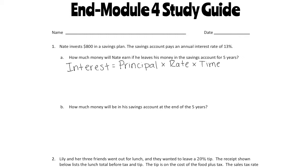Now we need to look at our scenario and figure out what's our principal, what's our rate, and what's our time. Our principal is going to be the amount that he puts into the savings plan, and he puts $800 into the savings plan. The rate is going to be the percent — the annual interest rate of 13%. When we have rate as a percent and we multiply it, we have to turn that percent into a decimal. So when I have 13%, I'm going to move my decimal to the left twice, giving me 0.13.